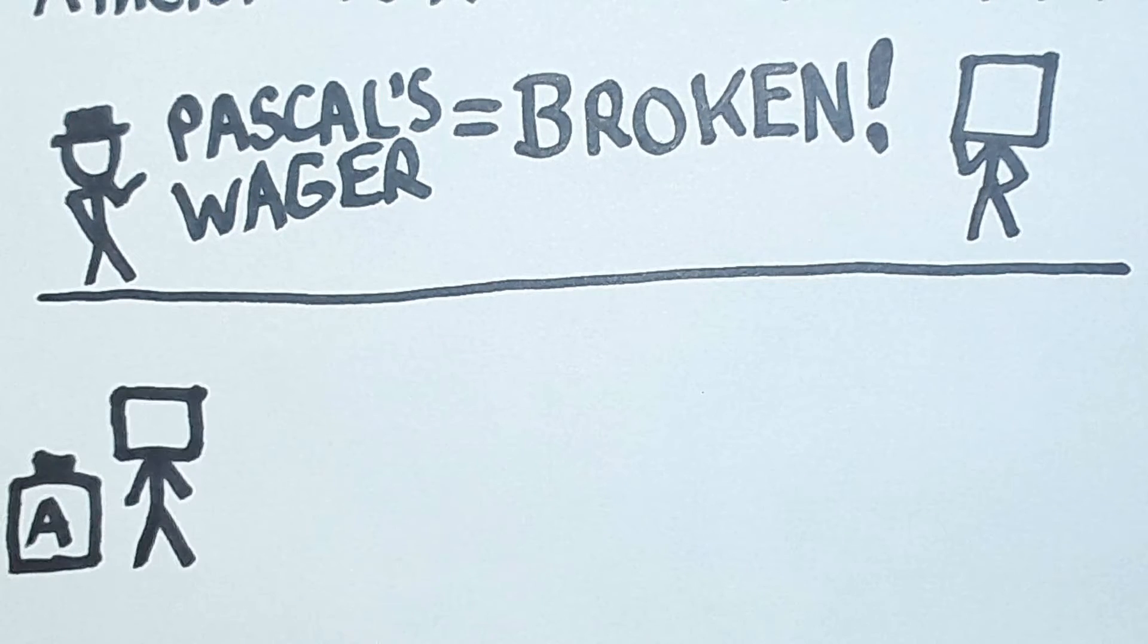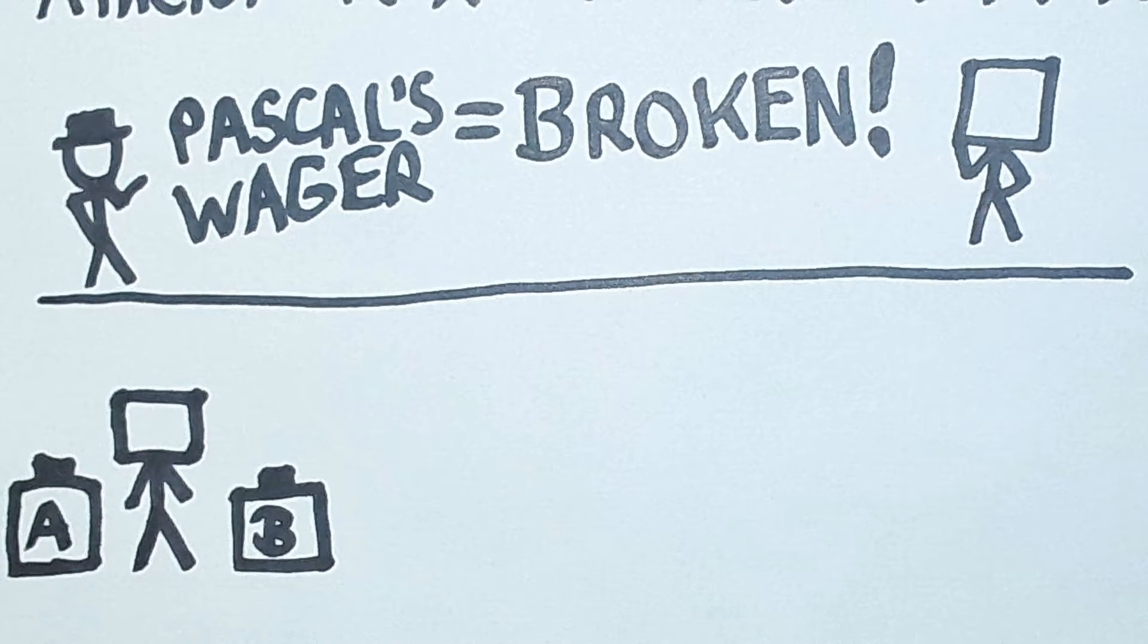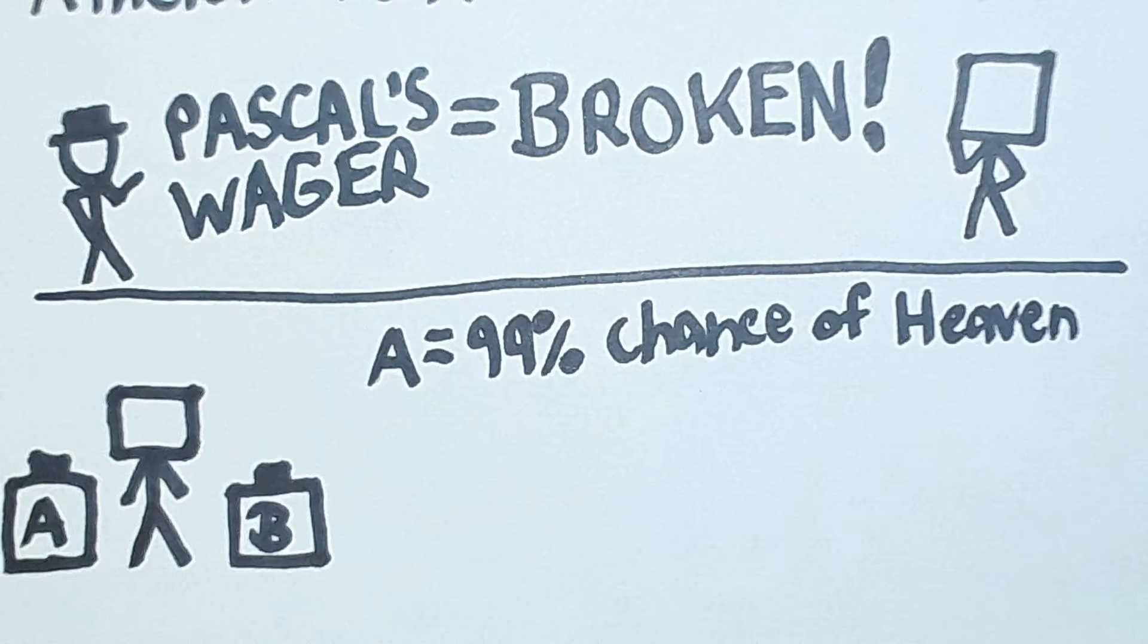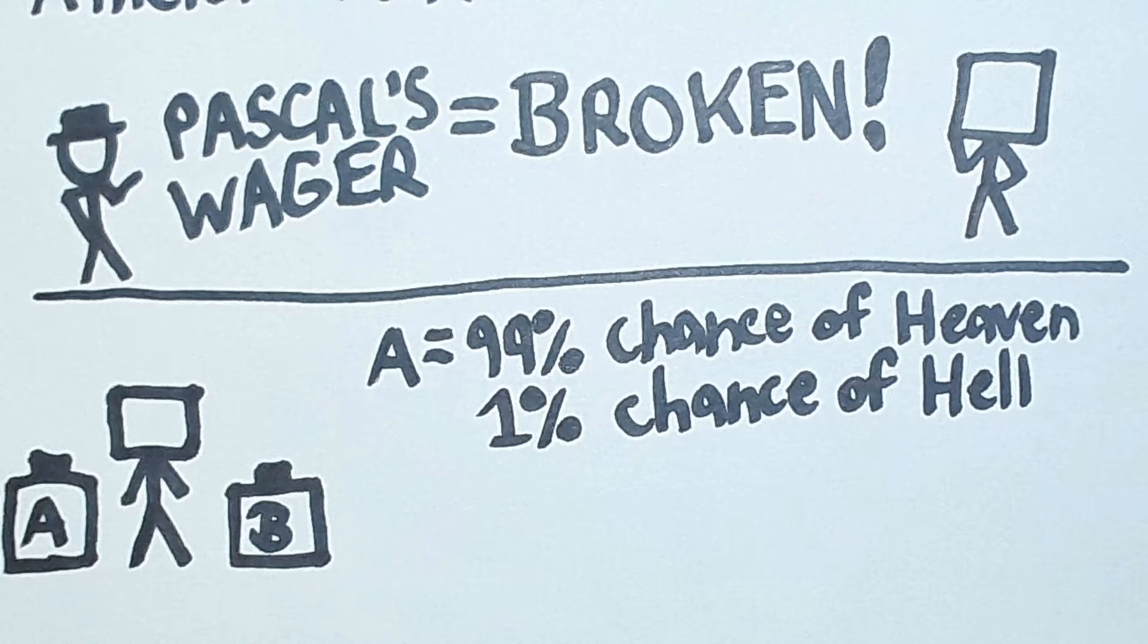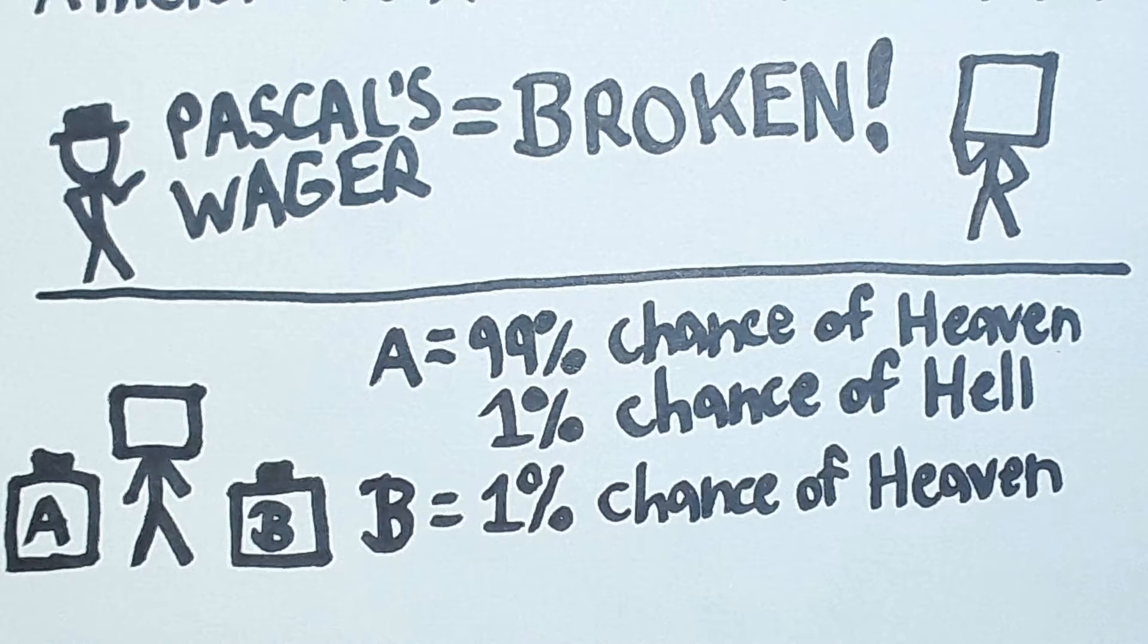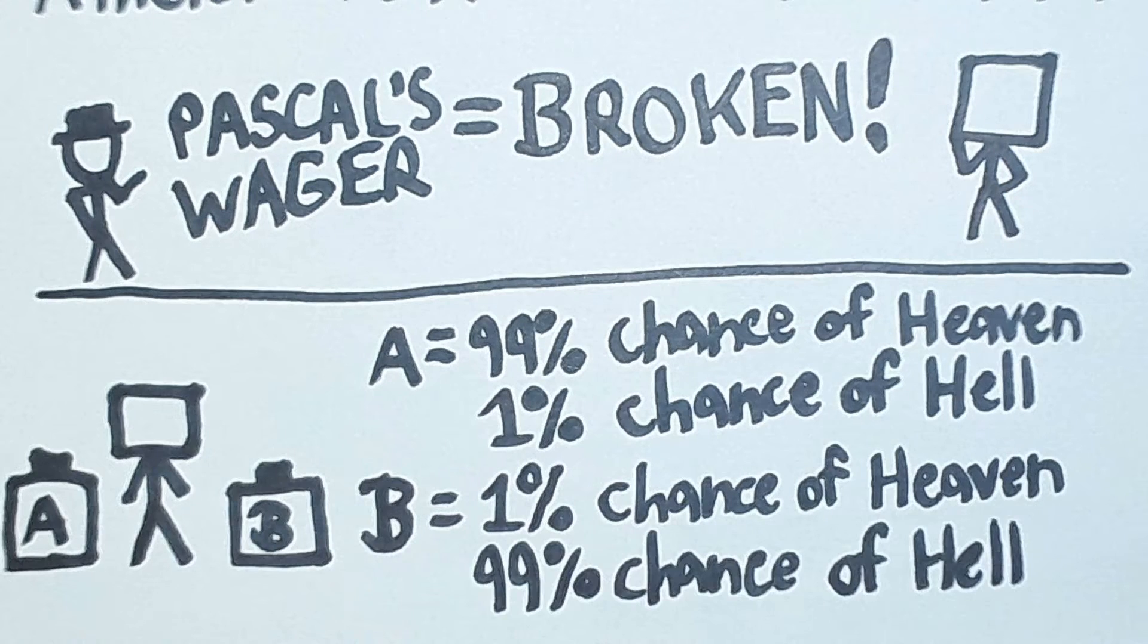I have two buttons. I must press one. If I press button A, then it has a 99% chance of sending me to heaven and a 1% chance of sending me to hell. If I press button B, then it has a 1% chance of sending me to heaven and a 99% chance of sending me to hell.